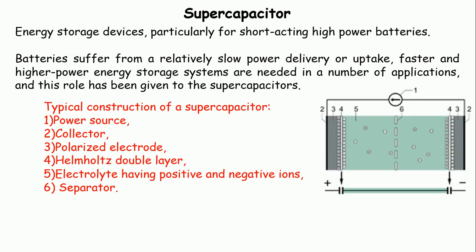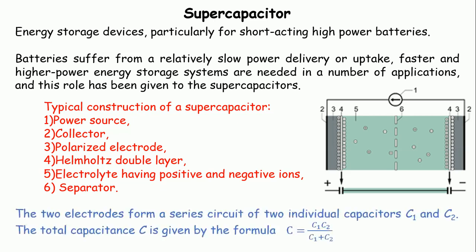On the right side of the figure you can see the super capacitor diagram with components numbered one to six. There are two electrolyte solution chambers separated by a separator. The total capacitance is given by C = C1·C2 / (C1 + C2). If the two chamber capacitors are the same, the total capacitance becomes C1/2 or C2/2. If they are different, the total capacitance is calculated according to the formula.